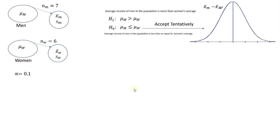In a society where the average income of men is equal to the average income of women, if you take a couple of samples — one from men and one from women — sometimes the average income of men would be more than the average income of women.